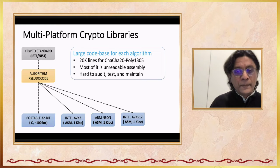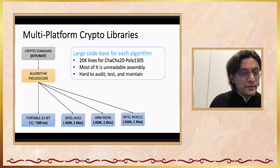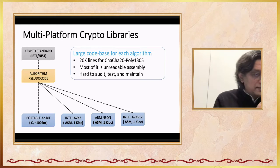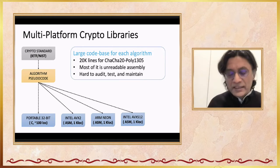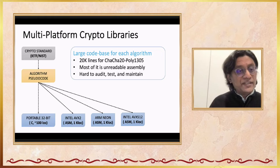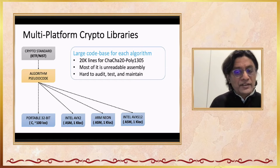Every year, new platforms arrive: all laptops and servers now support AVX-512, which means 16 operations in parallel and a 10x speedup. So there is a never-ending evolution where you keep getting new platforms providing different instructions and speedups. Before you know it, even just for ChaCha20-Poly1305, you end up with 20,000 lines of code in OpenSSL and BoringSSL because they have code for every single platform they wish to support. Most of this is unreadable assembly because it is highly optimized and platform-specific, making it impossible to audit, test, and maintain.